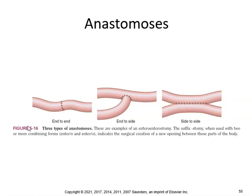Anastomosis — there are three types of anastomosis. These are examples of an enterostomy. The suffix stomy, when used with two or more combining forms like entero and enter, indicates the surgical creation of a new opening between those parts of the body — end to end, end to side. That's called anastomosis: a surgical connection between two body parts, such as a vessel, duct, or bowel segments.